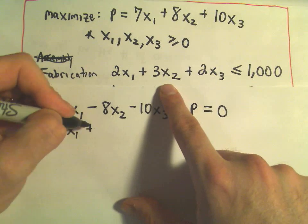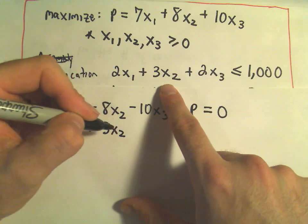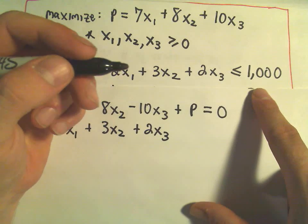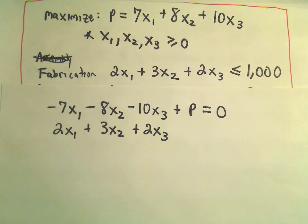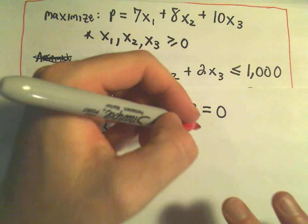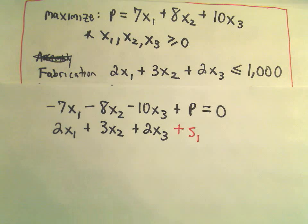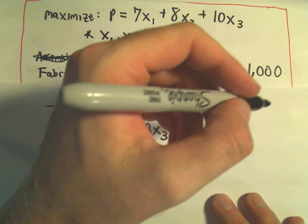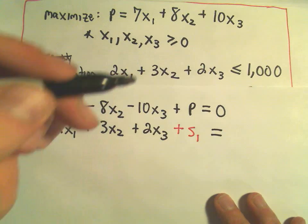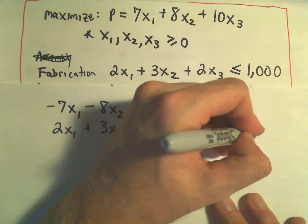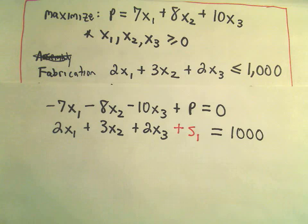I'm going to take though my second inequality and I'm going to introduce what's called a slack variable, so I've got 2x1 plus 3x2 plus 2x3, and what I'm going to do is I'm going to add this new variable, this slack variable, so I'm going to label that as s1, and the idea is that's going to pick up the slack in this inequality and make it into an equation, so instead of having less than or equal to, it's now going to become equals to 1000.